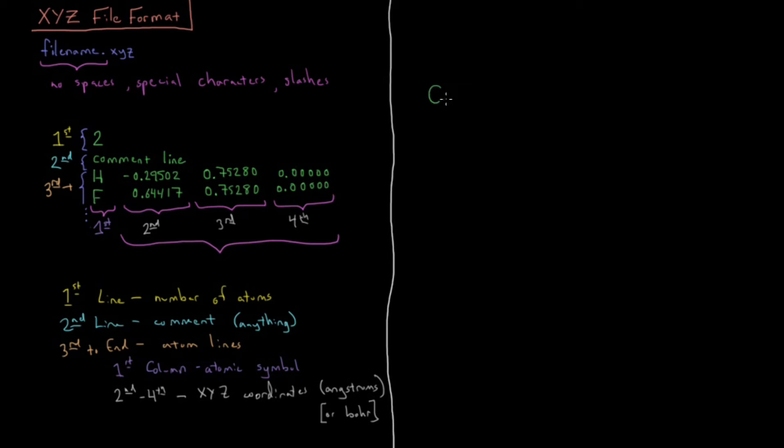Representing the molecule this way is called Cartesian coordinates, off of the Cartesian grid in three dimensions. So in Cartesian coordinates, we have our molecule represented by n atoms, n being the first line here. We have 3n coordinates then, because if we have two atoms, we have 2 times 3 equals 6 coordinates here.